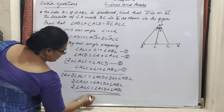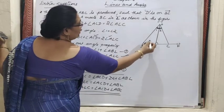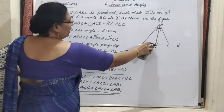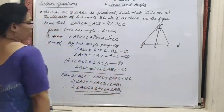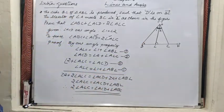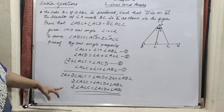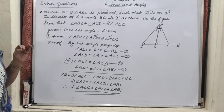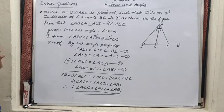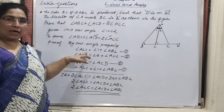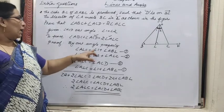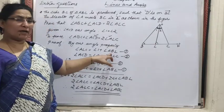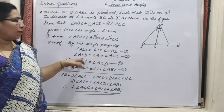Suppose angle ABC is 60, then angle ABL is also 60 only. So we have extended ray BL to BC. Therefore we are getting 2 times of angle ALC equals angle ACD plus angle ABC. In all the cases we used exterior angle property only. The first exterior angle is ALC — ALC means angle 1 plus angle B. Next we wrote ACD, which means angle 2 plus angle L.